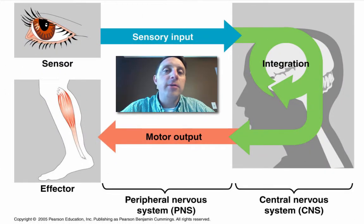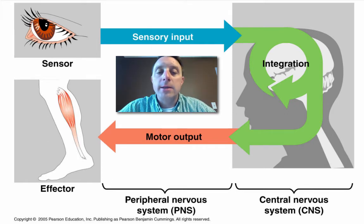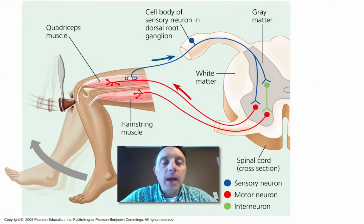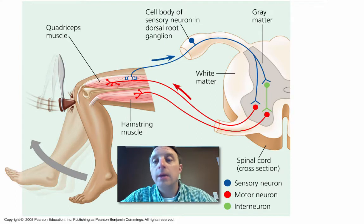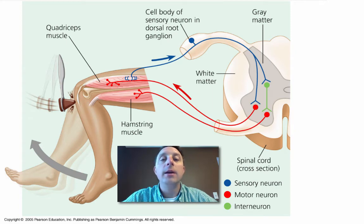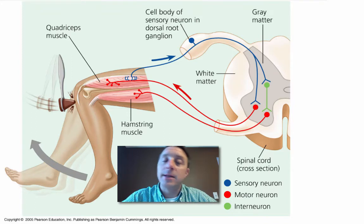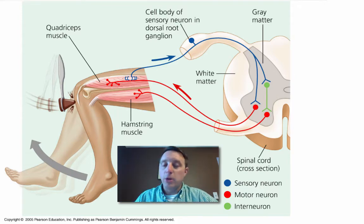Basic functions of the nervous system: there is sensory input, that input is sent into an integration center which coordinates an output to the motor cells. A basic example is a reflex arc. Reflex arcs work very quickly because for the most part they do not have to travel up to the brain — the integration center for a particular reflex arc can be in the spinal cord, so it does not go all the way up to the brain, connects in the spinal cord, and can respond much faster.